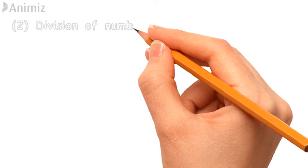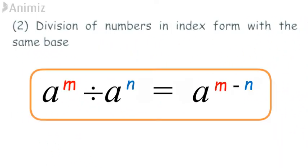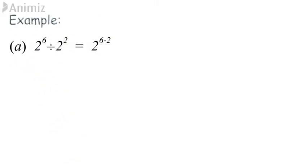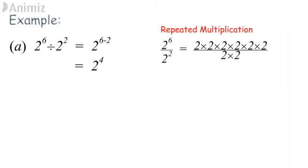Second law: division of numbers in index form with the same base. a^m ÷ a^n = a^(m−n). Example A: by applying the second law of indices, 2^6 ÷ 2^2 = 2^(6−2) = 2^4. Using repeated multiplication, dividing 2 by 2 repeatedly gives the same result.